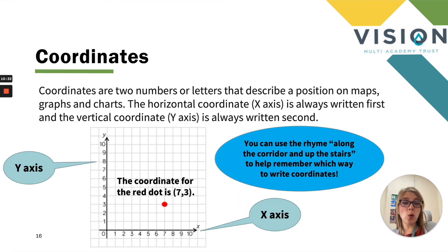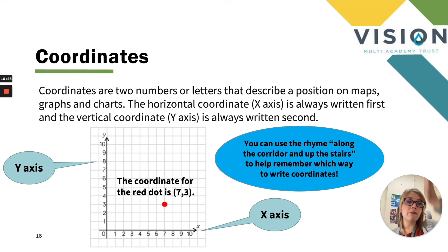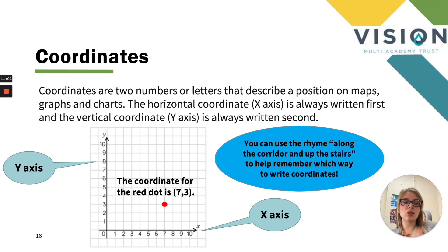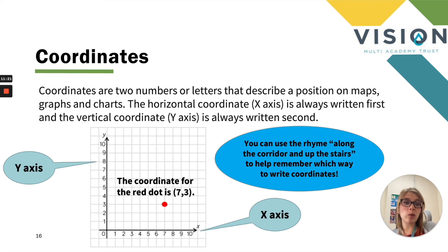Looking at coordinates now. Coordinates are two numbers or letters that describe a position on a map, graph or chart. The horizontal coordinate — the x-axis — is always written first, and the vertical coordinate — the y-axis — is always written second. I was taught the rhyme 'along the corridor and up the stairs' to remember the order. So for the red dot, the coordinate is (7, 3) — along seven and up three. Coordinates are always written with brackets either side and a comma in the middle.